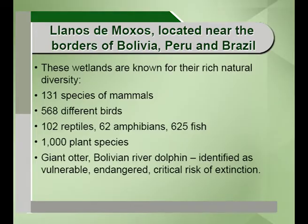Another case study is the Llanos de Moxos, located near the borders of Bolivia, Peru and Brazil. It is known for its rich natural diversity and is one of the largest wetlands in the world. It has 131 species of mammals, 1,000 plant species, 625 species of fishes and more than 500 species of different birds. The Bolivian river dolphin and the giant otter are considered to be at critical risk of extinction.